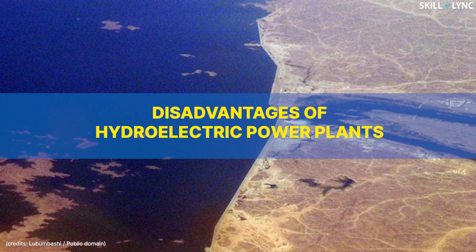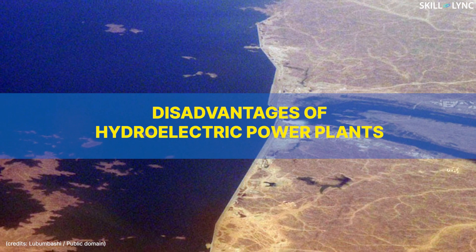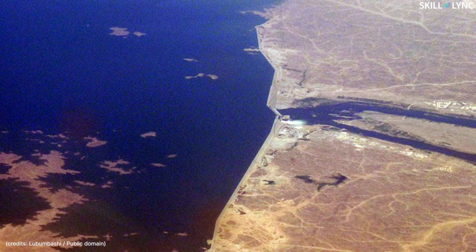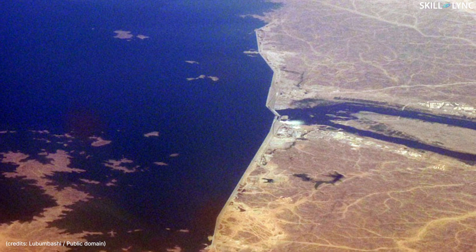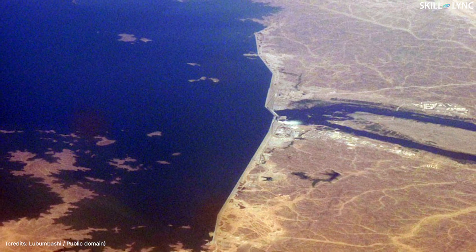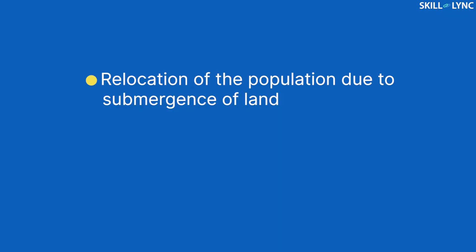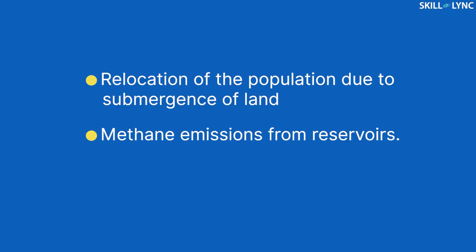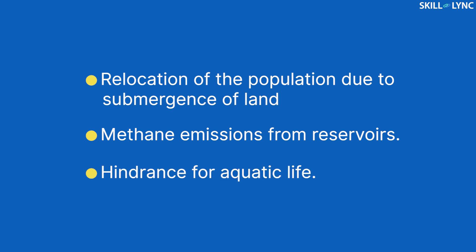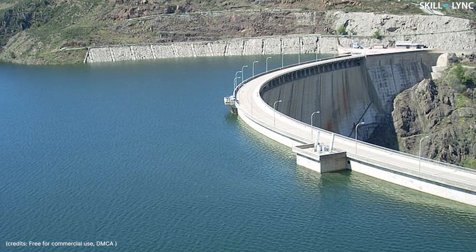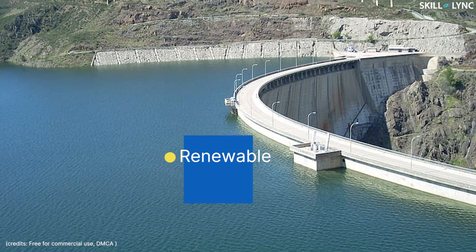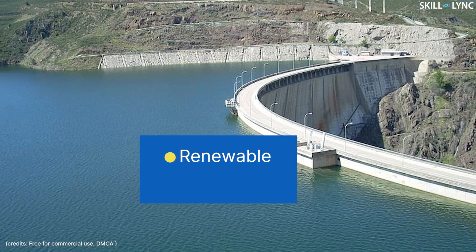Hydroelectric power plants have some disadvantages as well. For example, large hydroelectric power plants have reservoirs that cause submersion of large areas of land, which causes the relocation of the population. Also, the flooding of plant matter in the reservoir causes it to decay, resulting in methane emissions. Hydroelectric power plants also create a hindrance to the movement of aquatic life.